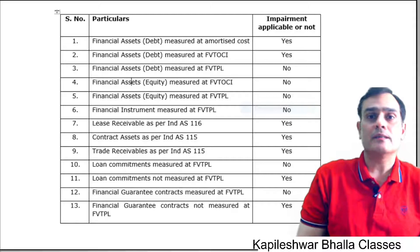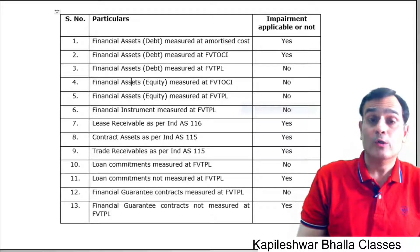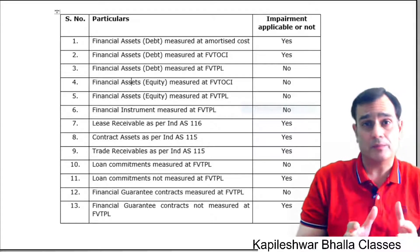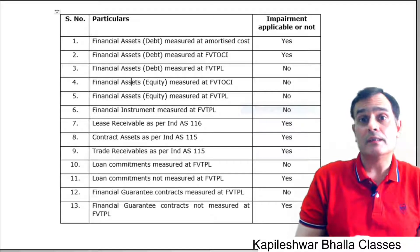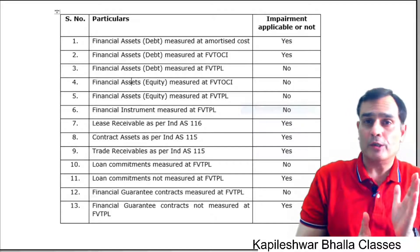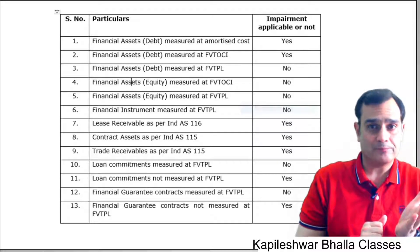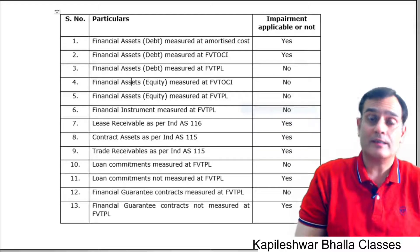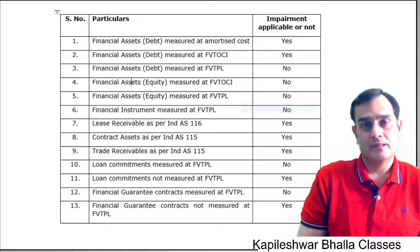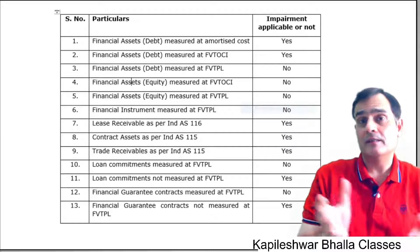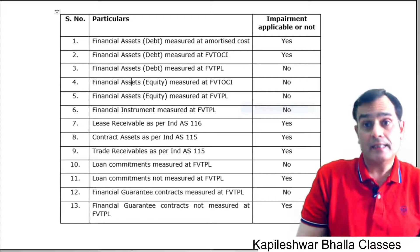Looking at points 10, 11, and 12 — loan commitments and financial guarantee contracts. For loan commitments at FVTPL — the moment it is FVTPL, ECL does not apply. The moment it is not at FVTPL, ECL applies. The same goes for financial guarantee contracts: if measured at FVTPL, ECL does not apply; if not measured at FVTPL, it does apply.